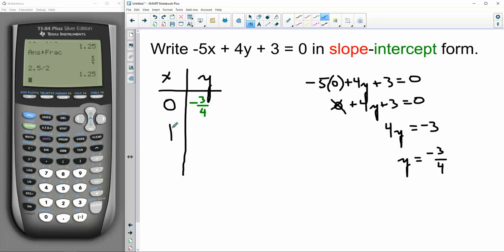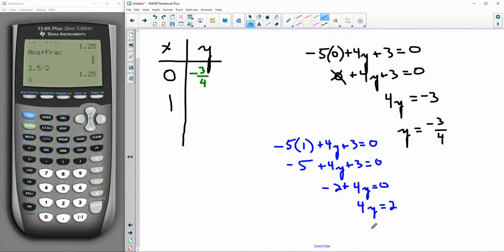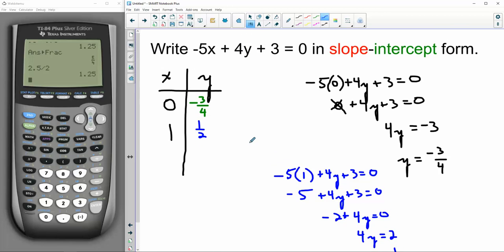Okay, now let's do it again. And this time let's put 1 into the equation. Okay, so we'll do negative 5, instead of times 0 we'll do times 1, plus 4y plus 3 equals 0. Negative 5 times 1 is negative 5. Negative 5 plus the 3 is negative 2. And then we'll add 2 to both sides, and then we'll divide both sides by 4 and get 1/2.